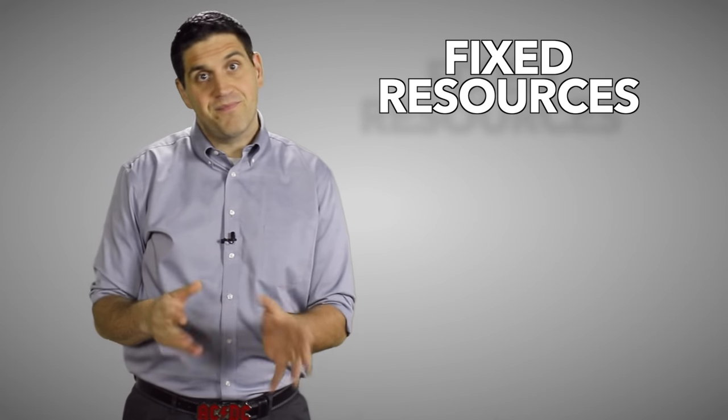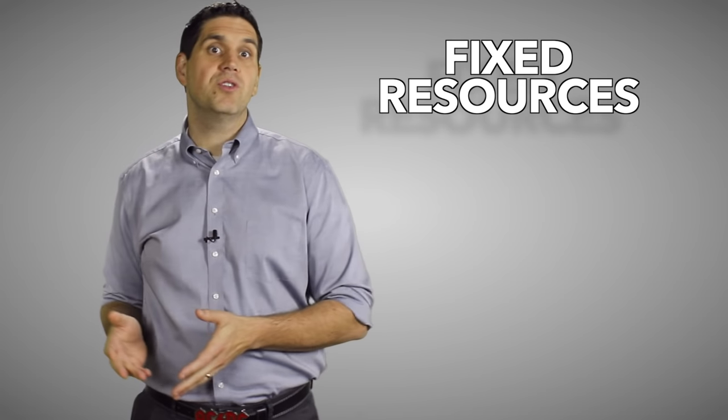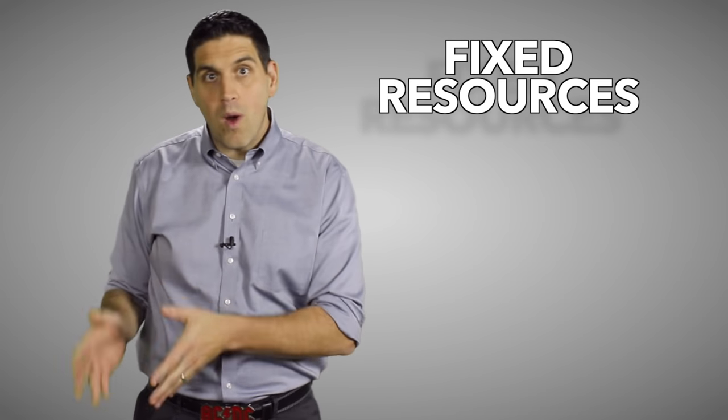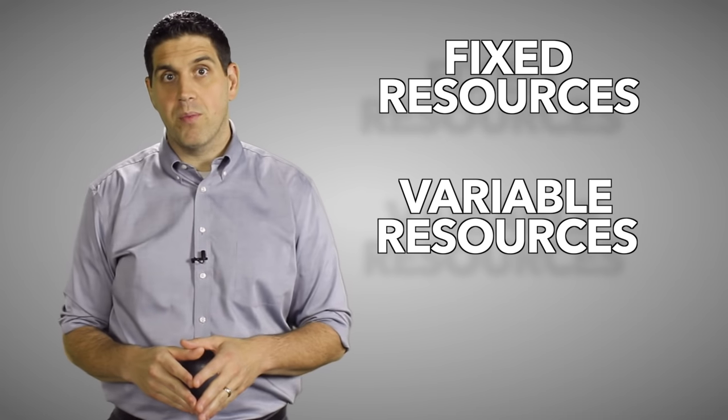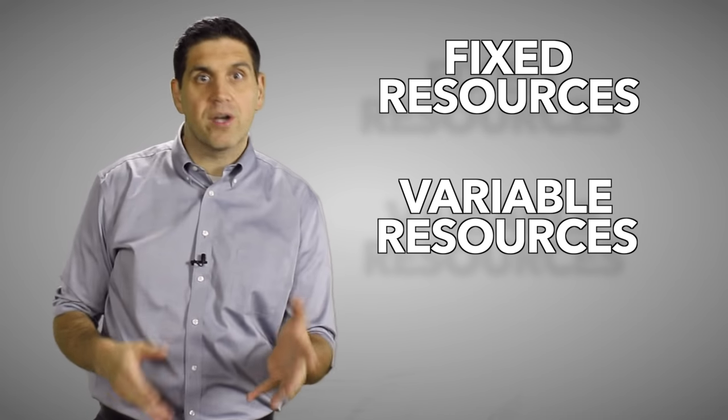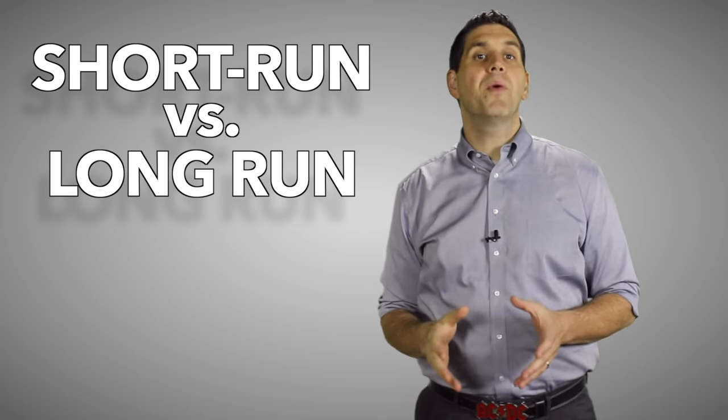First, keep in mind that there's two types of resources: fixed resources and variable resources. Fixed resources don't change as you produce more, like a pizza oven. Whether you produce one pizza or 500 pizzas, you still need that one oven. Variable resources do change with the more that you produce. So the more pizzas you make, the more workers, dough, and cheese you need.